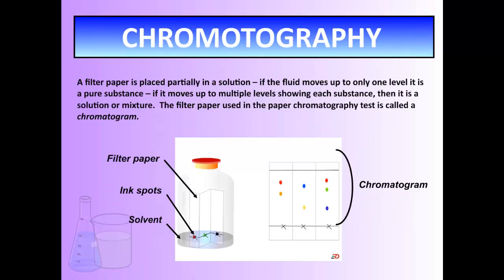We can use something called chromatography to determine whether a substance is a pure substance or a mixture. It works by taking filter paper and putting dots of the substance — let's say a marker — on it, then placing just the tip of the filter paper inside a solvent, which can be water or other things. As the water travels up the filter paper, if it's a pure substance, the marker won't move much. If it's a mixture, we get a nice blend of different colors all the way up — what's called the chromatogram — and we see all the different colors within the substance.